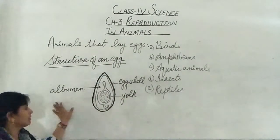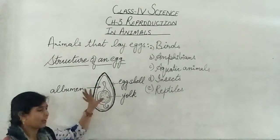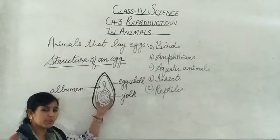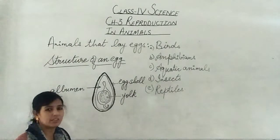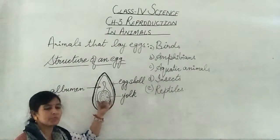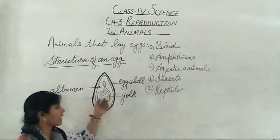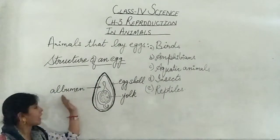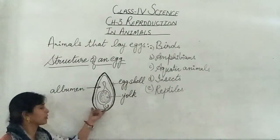yolk and albumin. Egg shell is the outer structure which protects the internal part of the egg. Yolk is the middle portion of the egg which contains an embryo. An embryo is a small organism that develops after hatching. So yolk contains mainly proteins, vitamins, minerals. And outside the yolk, there is albumin which is semi-liquid in form.